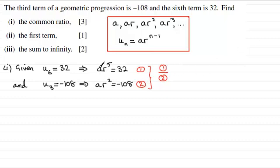Well, the a's would cancel out, then we'd have r to the 5 over r squared, which is r cubed. So you've got r cubed equals, and then you've got 32 divided by minus 108. That's going to be a negative value overall, so it's minus 32 over 108.